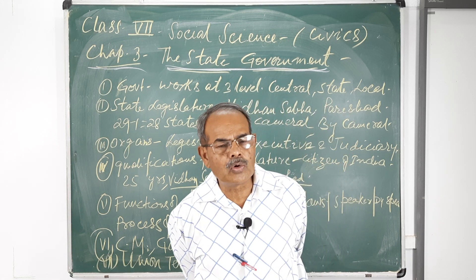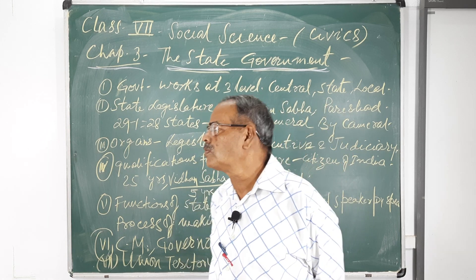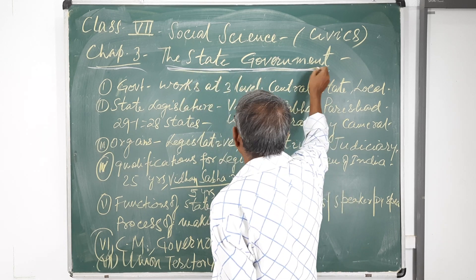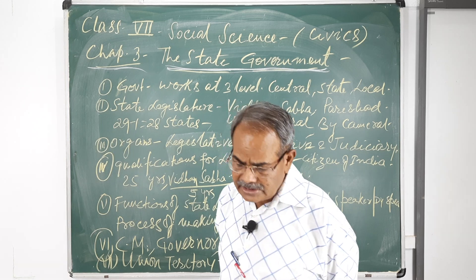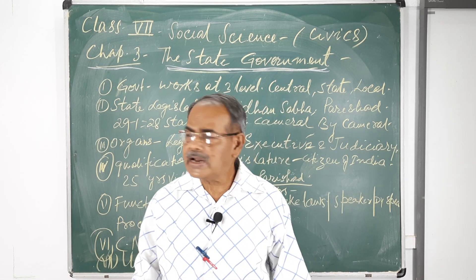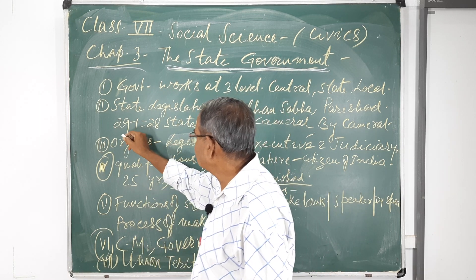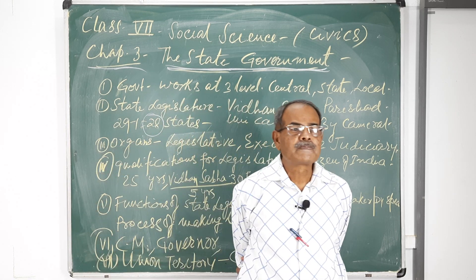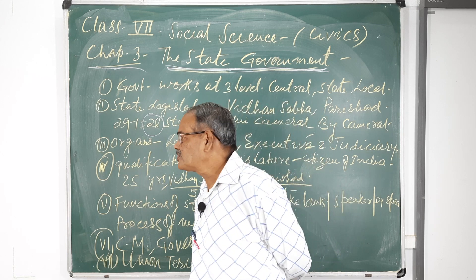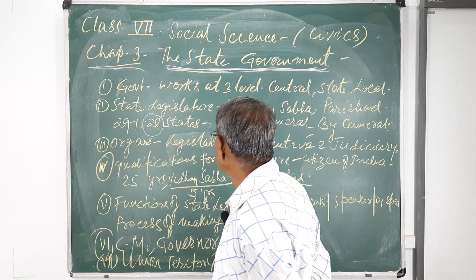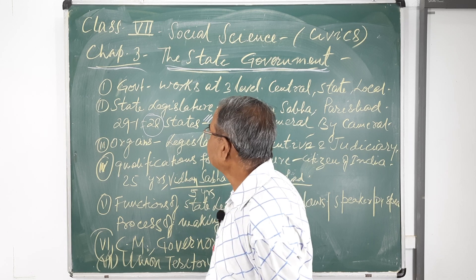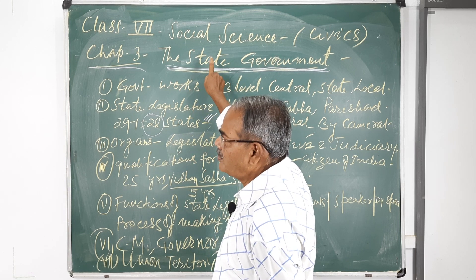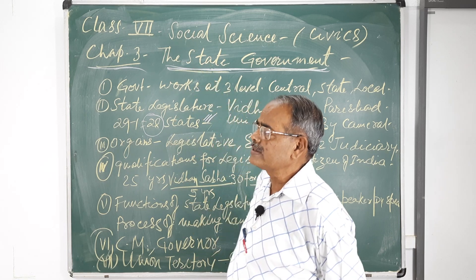That is throughout the whole country we are ruling — that is the union government. Today we are going through the state government. There are 29 states, and each and every state has a separate system of ruling. We will study today regarding the state government.